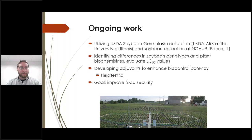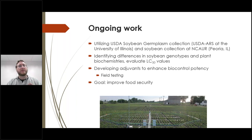For our ongoing work, we plan to utilize the USDA soybean germplasm collection at the University of Illinois, as well as the soybean collection at the NCAUR facility, which gives us roughly 20,000 cultivars to select from. We are hoping to identify differences in selected soybean genotypes by evaluating the LC50s and determining differences in plant biochemistries, using those biochemistries to develop adjuvants or spray treatments which can help enhance and improve biocontrol potency with the ultimate goal of improving food security.